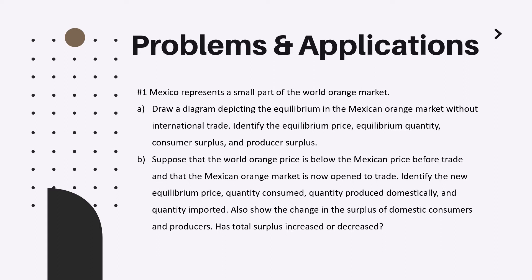Draw a diagram depicting the equilibrium in the Mexican Orange Market without international trade. Identify the equilibrium price, equilibrium quantity, consumer surplus, and producer surplus. Suppose that the world orange price is below the Mexican price before trade, and the Mexican orange market is now opened to trade. Identify the new equilibrium price, quantity consumed, quantity produced domestically, and quantity imported. Also, show the change in the surplus of domestic consumers and producers. Has total surplus increased or decreased? So, this is a good question with the help of which we should understand the effects of trade on a particular market. Let us start with A.